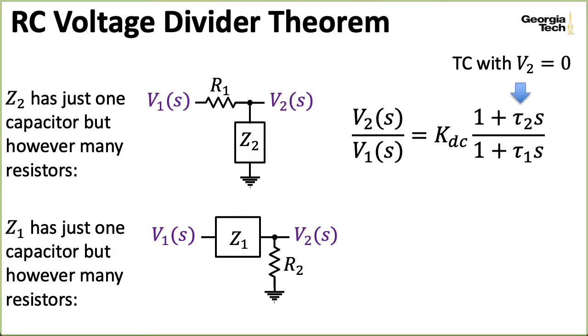The time constant on top is computed with V2 set to zero volts and the V1 side left dangling, and the time constant on the bottom is computed with V1 set to zero volts and with the V2 side left dangling.